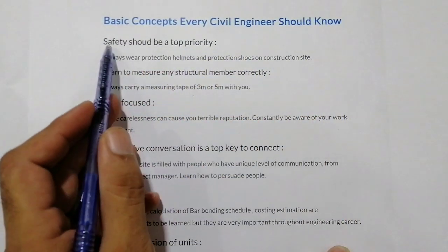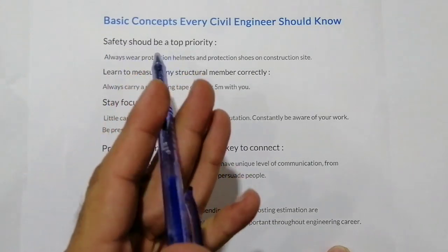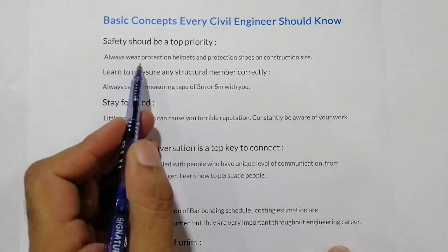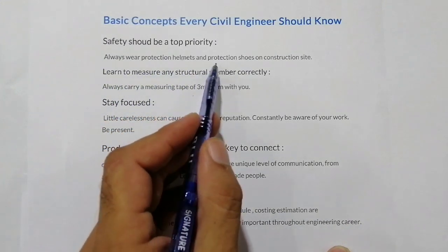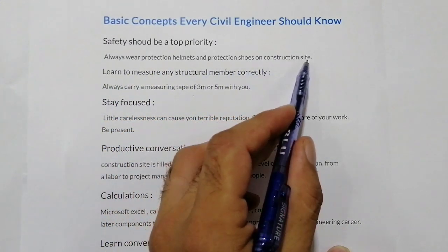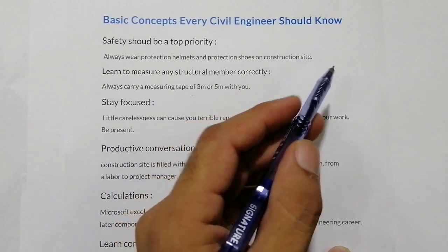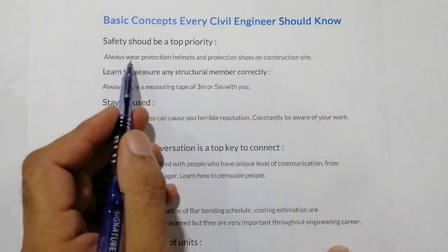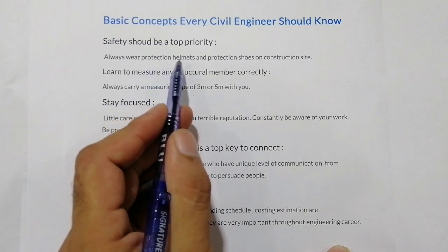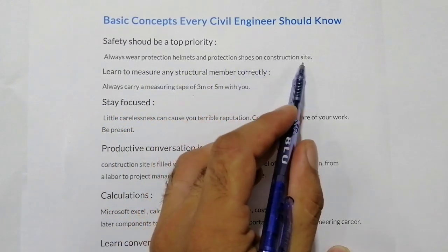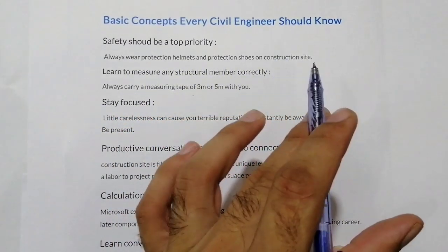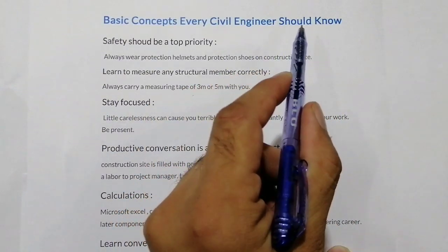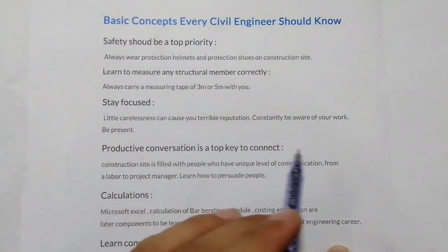If you are working on a construction site, always wear a protection helmet and protection shoes on the construction site. Otherwise it will cause a problem for you if you don't use any protection helmet or shoe on the construction site. So safety is the first priority on the construction site, especially for a civil engineer.